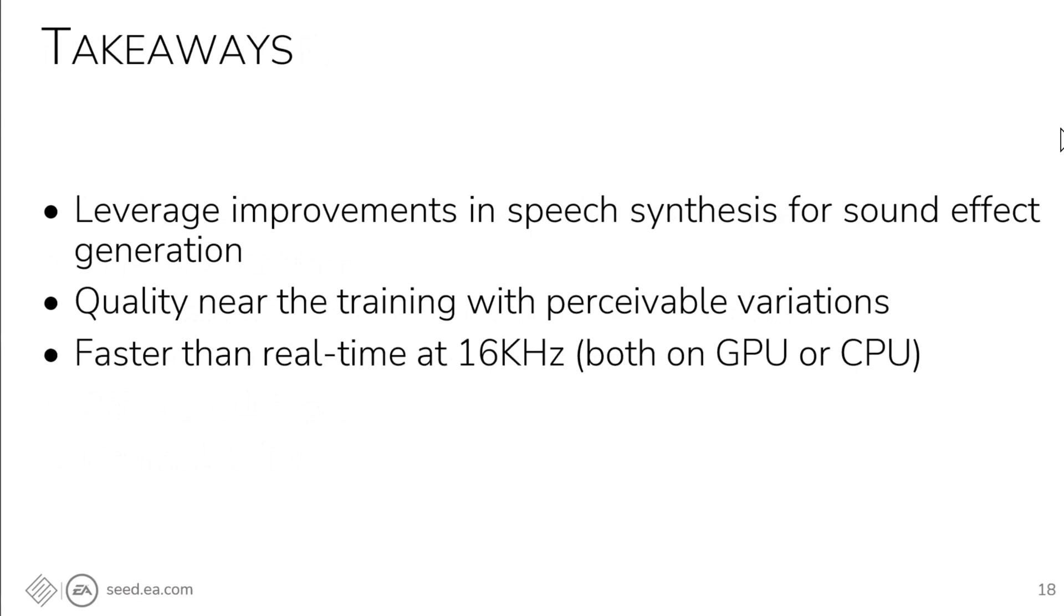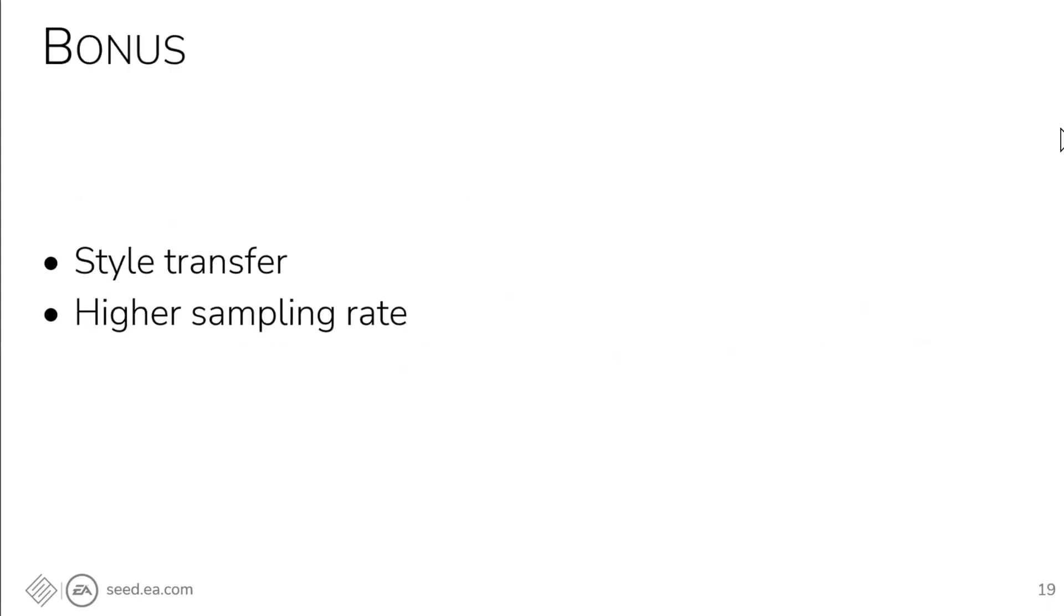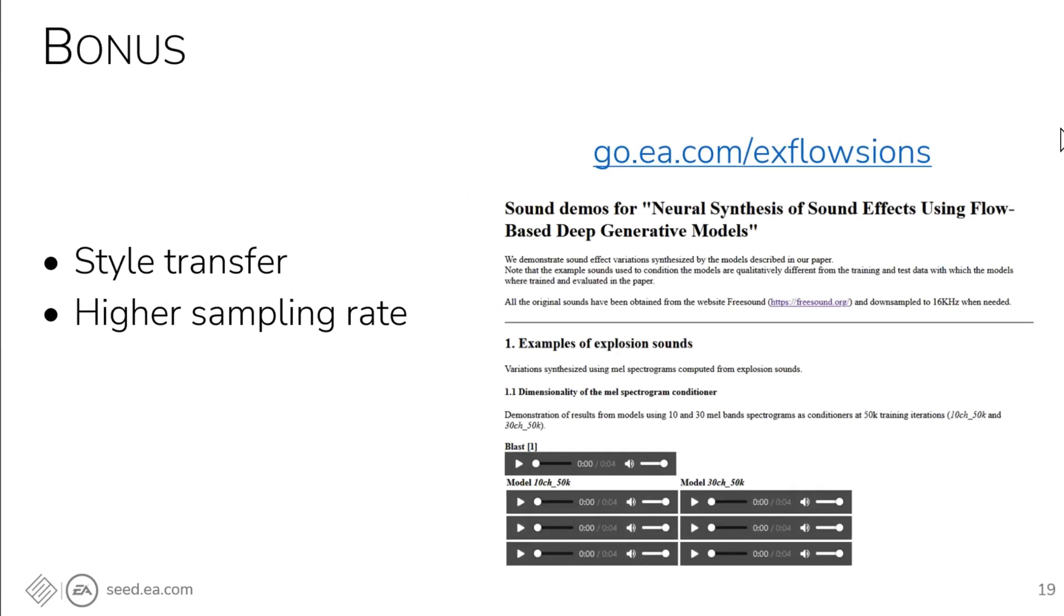Some takeaways from this talk is that we have leveraged the latest improvements in the field of speech synthesis, but applied them to sound effect generation. The quality of our generated samples is close to the training set, while maintaining perceivable variations, both by experts and non-experts. And this is performed faster than real-time, both in GPU and CPU. And as a bonus, we can perform style transfer for sounds that are not in the distribution of the training set, and we've shown that we can also train models at a higher sampling rate. So feel free to check out our webpage where you can hear more sounds and also notice the differences between the models from their study.